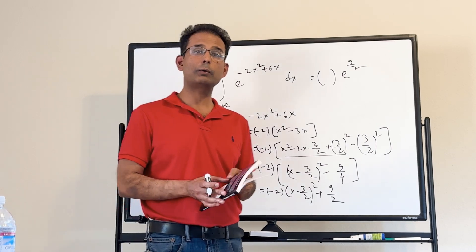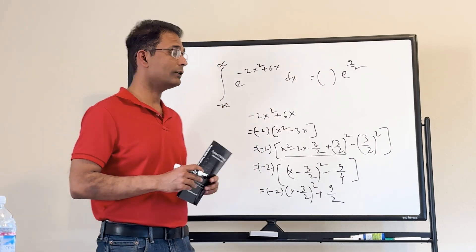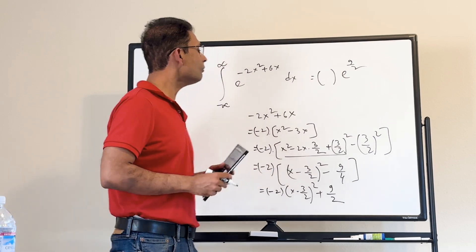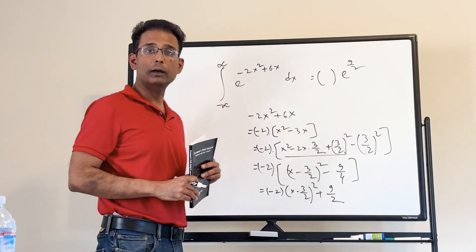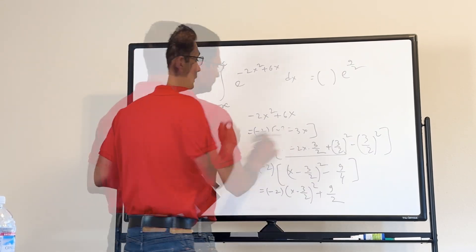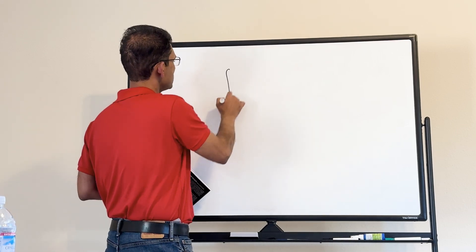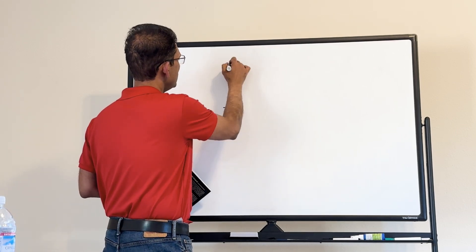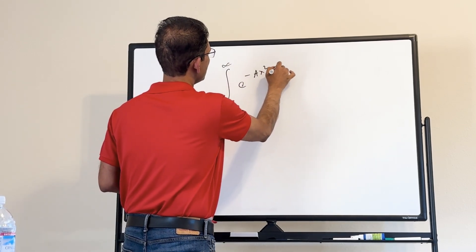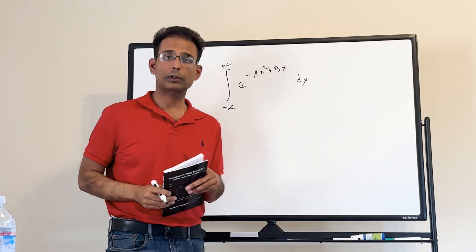Next we do the last problem for today's session: a general formulation of this type of integral. We compute: minus infinity to plus infinity of e to the minus ax squared plus bx dx. This is a general expression covering all the specific integral forms we've been doing. Here a must be a positive number for convergence, while b can be anything.